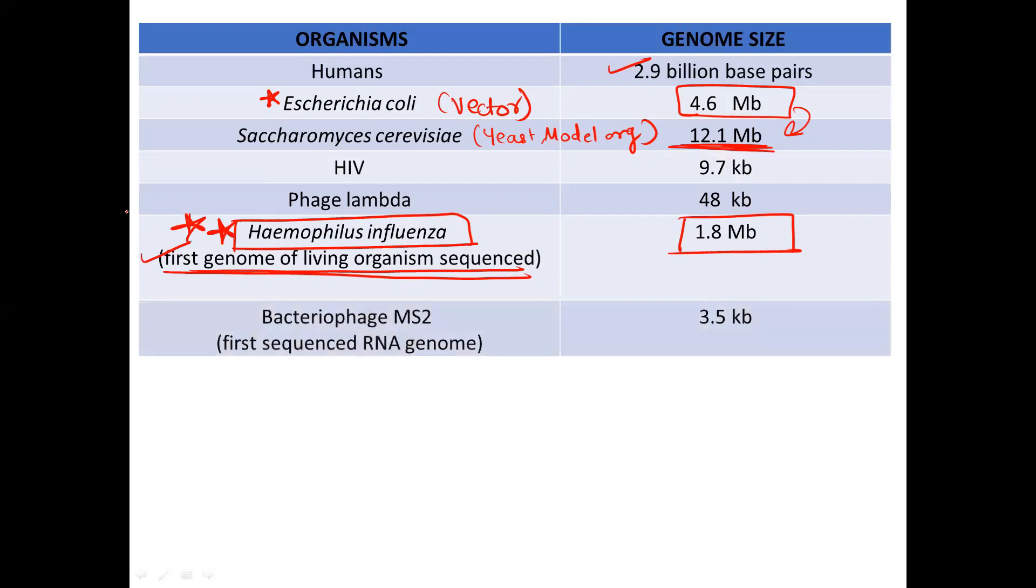Next you have the bacteriophage MS2. This was the first RNA genome, don't get confused, the first RNA genome to be sequenced, that is 3.5 KB. Next up we have phage psi X174. It is the first DNA genome to be sequenced, having base pair calculation 5.4 KB.